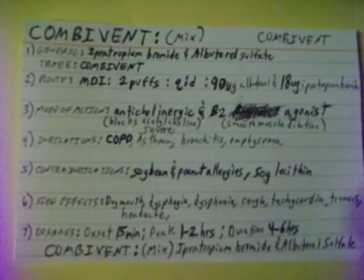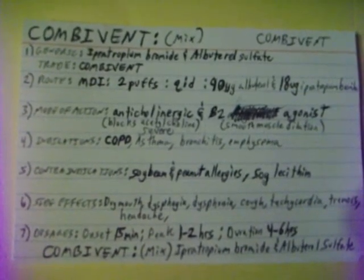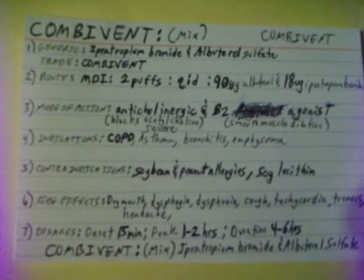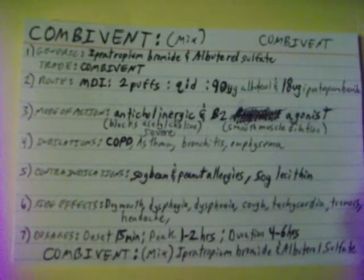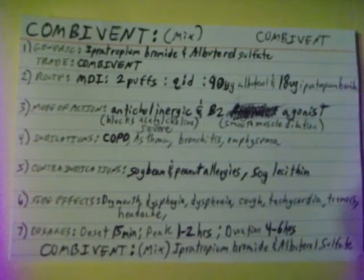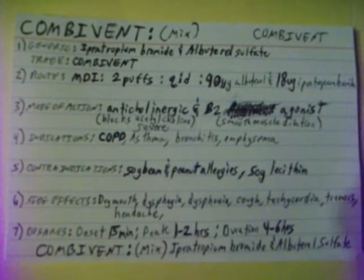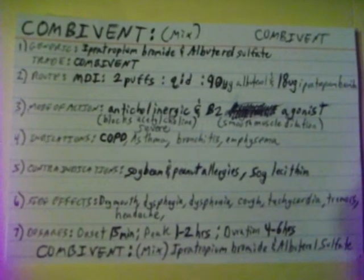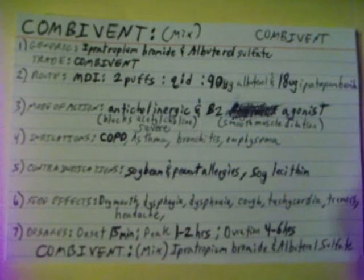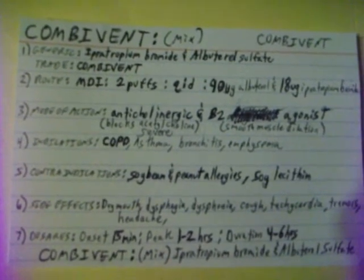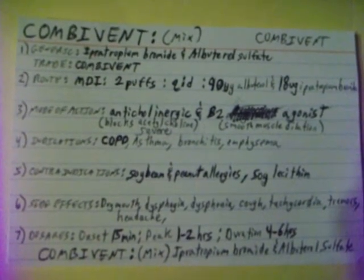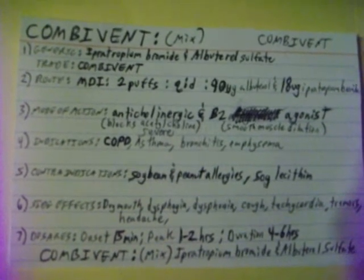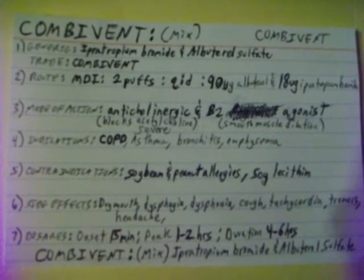Combivent is a mix of ipratropium bromide and albuterol sulfate. Trade name: Combivent. Generic names: ipratropium bromide and albuterol sulfate. Combivent is given by a metered dose inhaler at two puffs, QID, four times daily. Each puff consists of 90 micrograms of albuterol and 18 micrograms of ipratropium bromide.